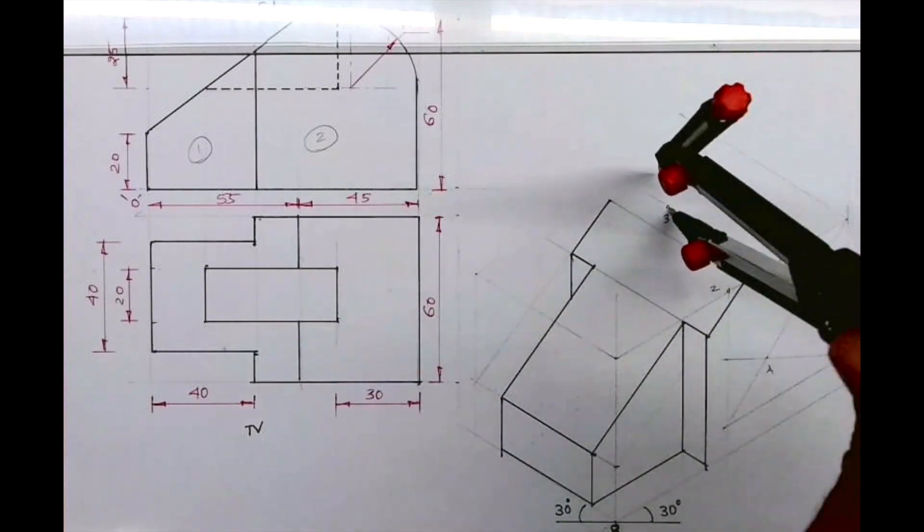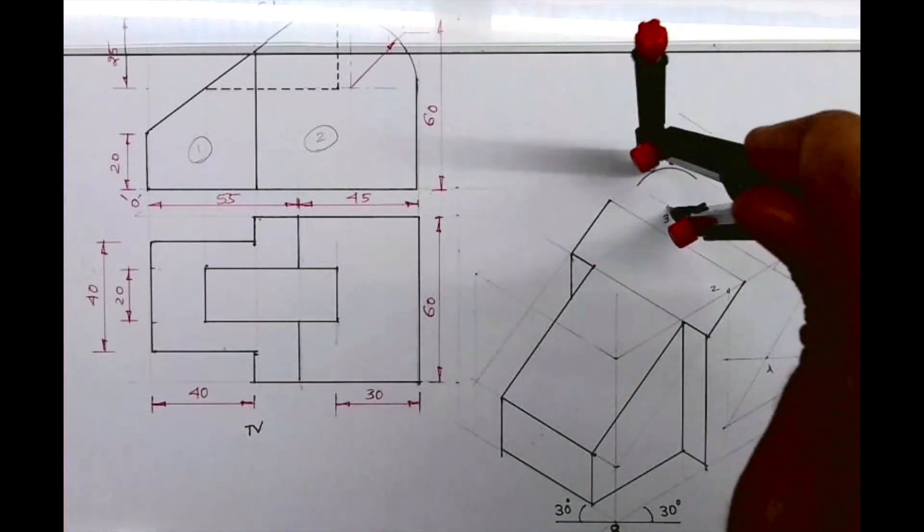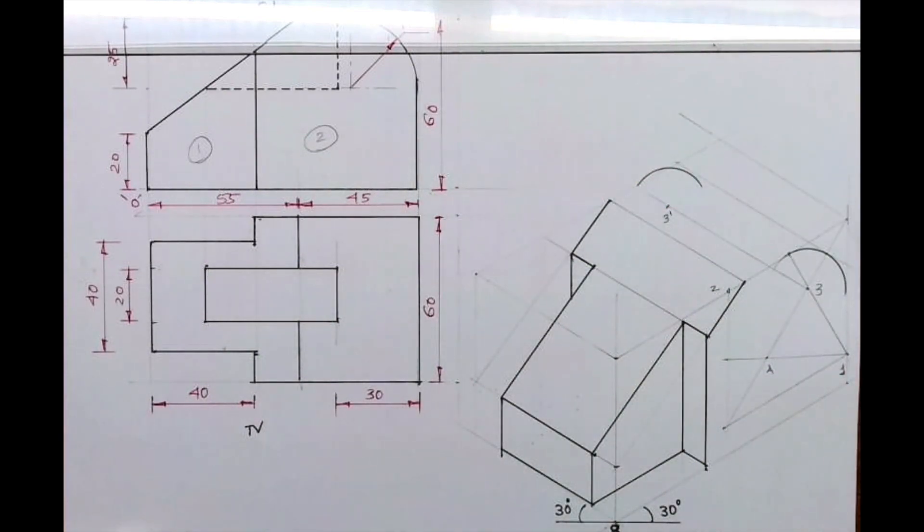Now you take the radius and you draw it behind like this. So take the radius, go behind by 60, and you can draw the arc.